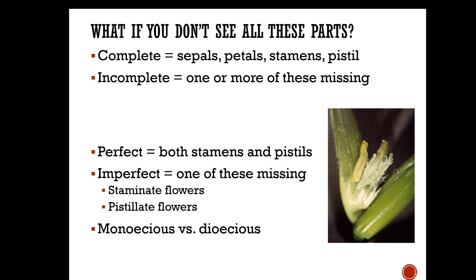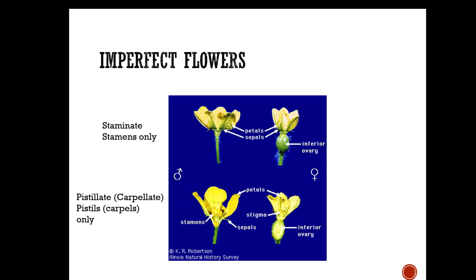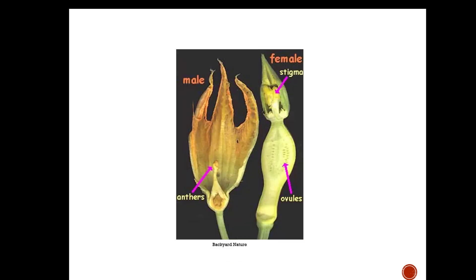This is where we have monoecious and dioecious plants. Here's an incomplete flower — it has everything but the petals. Imperfect flowers: the staminate has only stamens, and the pistillate or carpellate has only pistils or carpels. Monoecious plants have imperfect flowers with staminate (male) and carpellate (female) flowers on the same plant — here's squash as an example.